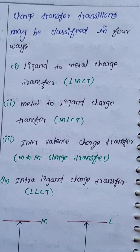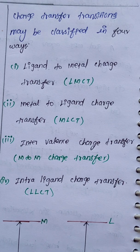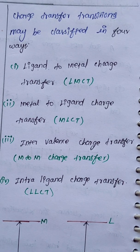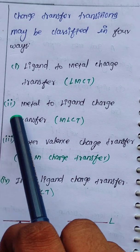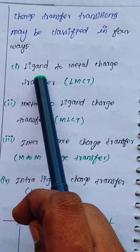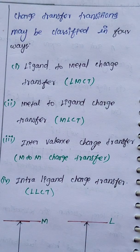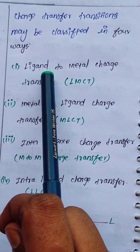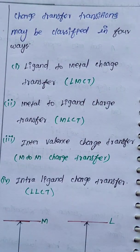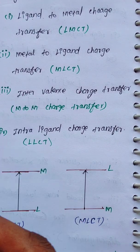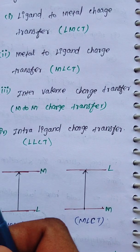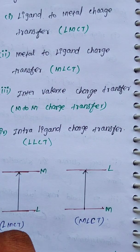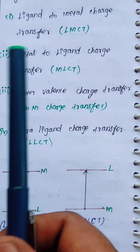In ligand to metal charge transfer, the ligand has electron density while the metal has an empty orbital. The electron is donated from the ligand to the vacant orbital of the metal. When we observe the absorption band, it corresponds to ligand to metal charge transfer.